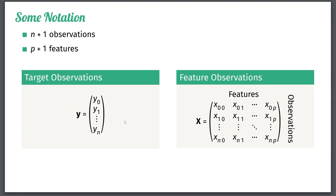We can do the same thing with the feature observations. Here is the data set containing all the features, where the different columns correspond to the features — we have p different columns — and the observations correspond to rows. So for observation zero we have a number of different features that we have measured and a corresponding target. Let's do an example of this.